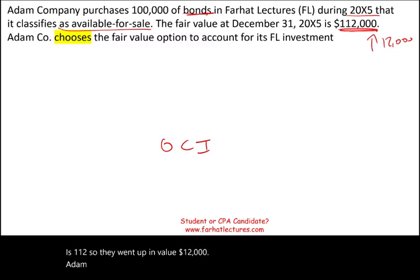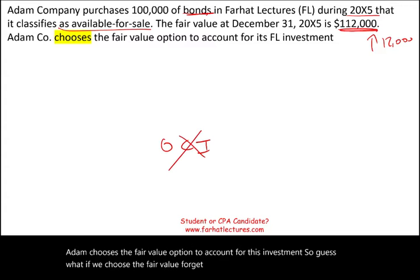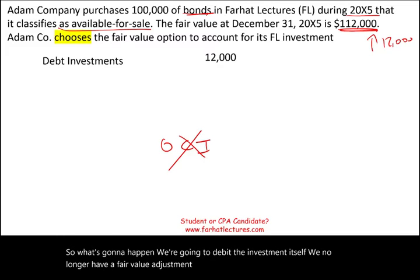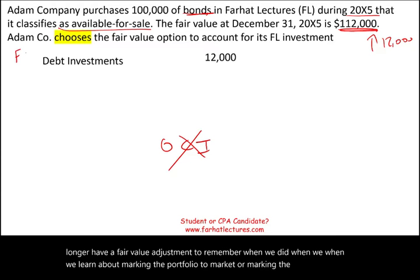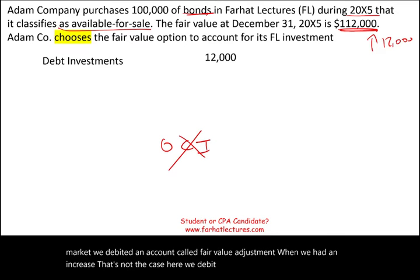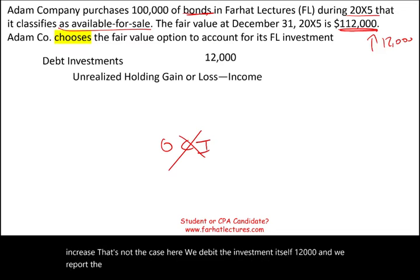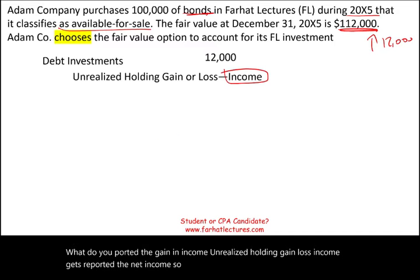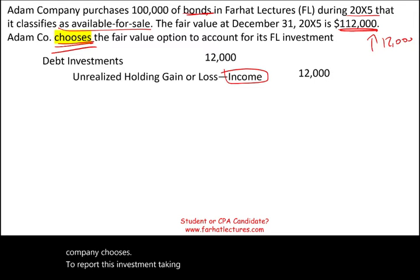Adam chooses the fair value option to account for this investment. So if we choose the fair value option, forget about OCI — the gain will go into income. We're going to debit the investment itself. We no longer have a fair value adjustment account. We debit the investment itself $12,000, and we report the gain in income. Unrealized holding gain or loss goes into net income, not OCI, because the company chooses to take advantage of the fair value option.